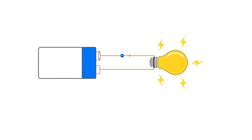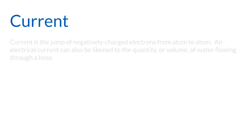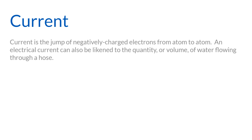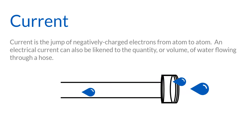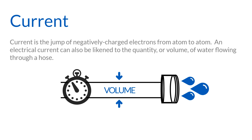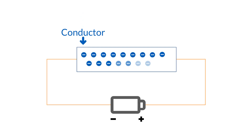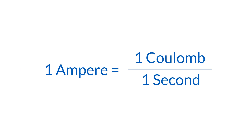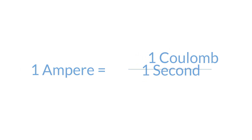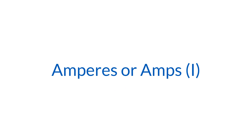Previously, we talked about dynamic electricity. Dynamic electricity is the flow of electrons in a circuit or electrical system, called current. Current is the jump of negatively charged electrons from atom to atom. An electrical current can also be likened to the quantity or volume of water flowing through a hose. With water, we measure the volume of water flowing through the hose over a certain period of time, like gallons per minute. With current, we measure the number of electrons flowing through a conductor over a period of time. Current is measured in coulombs per second, which is called amperes or amps for short. Amps are represented in equations by the letter I.